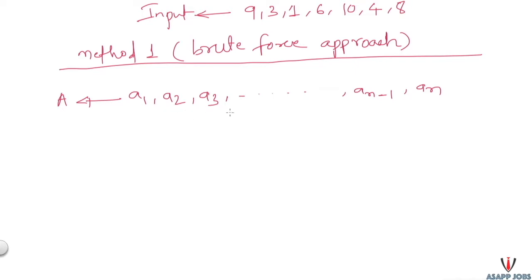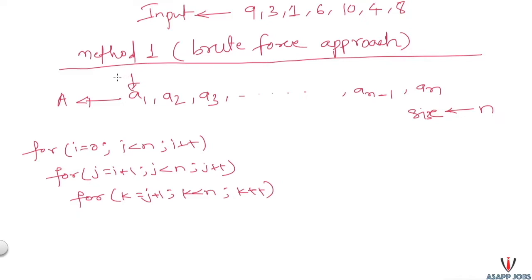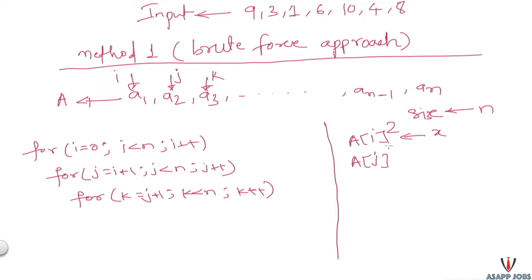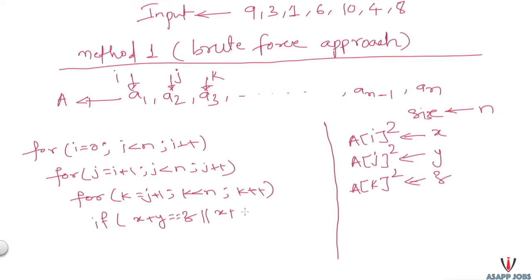Let's say our input sequence is a1, a2, a3, ... aN where the size is n. In method one, we use three nested for loops where i starts from index 0, j from index 1, and k from index 2. We set x = a[i]², y = a[j]², and z = a[k]². Inside the third loop, we check whether x + y = z, or x + z = y, or y + z = x.